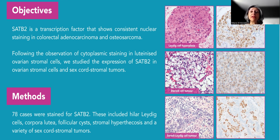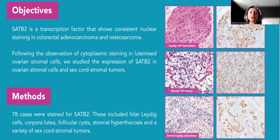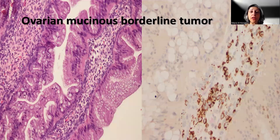Remember, SATB2 is a nuclear stain. However, our description is actually for cytoplasmic staining in luteinized cells, as well as sex cord and stromal cell tumors and cells within the ovary.